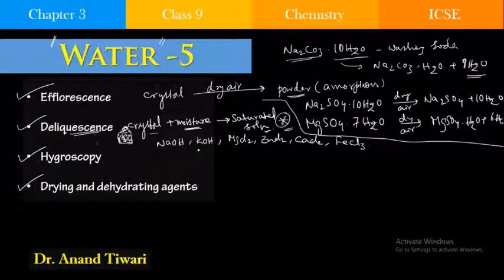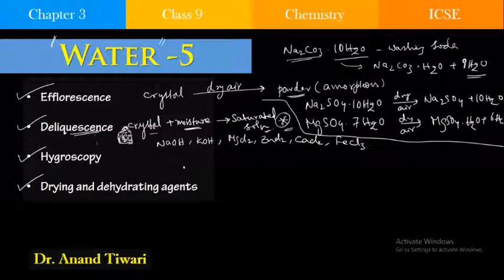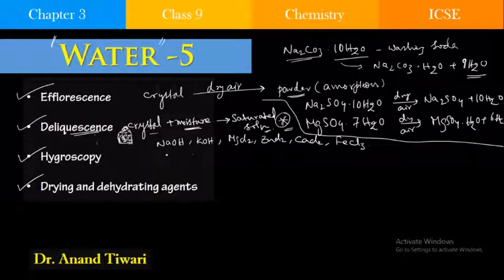Sometimes at home we observe that common salt — the table salt — turns moist and ultimately forms a solution. But these days, branded salts we use at home generally don't exhibit this deliquescence, because they don't have impurities like magnesium chloride and calcium chloride. However, in nature, with very less processing, sodium chloride contains calcium chloride and magnesium chloride, and that kind of salt when kept at home will absorb that moisture.